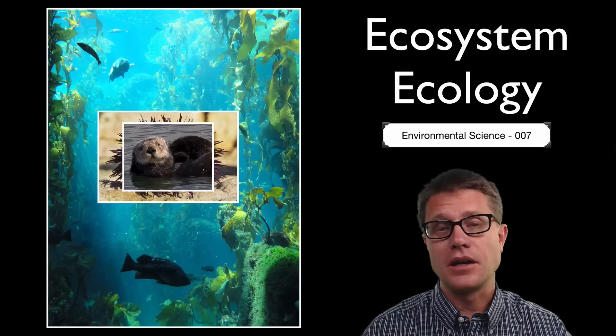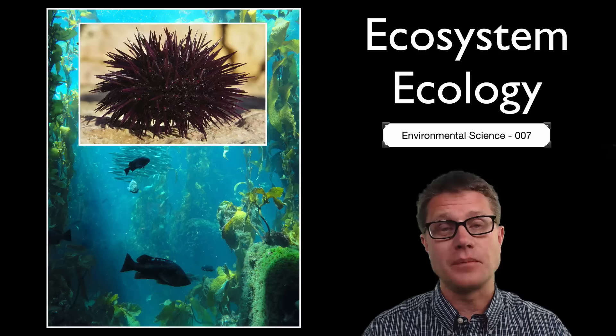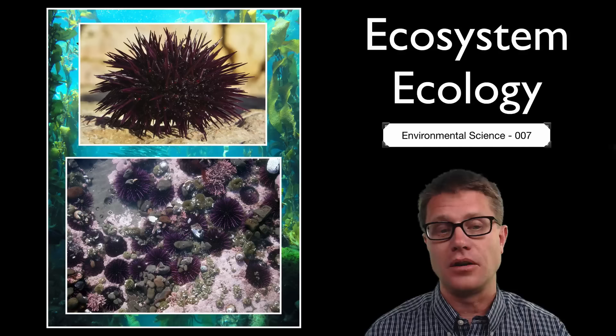The problem with the sea otter is if it dies due to hunting or predation, then the sea urchin populations will take off. Sea urchins feed on kelp by trimming the bottom and sometimes the kelp will simply float away. If you have too many sea urchins you get what are called urchin barons, where there are no kelp and therefore the whole ecosystem folds in on itself.